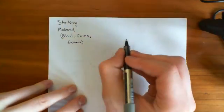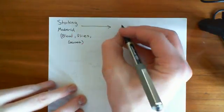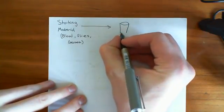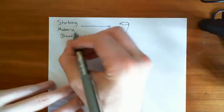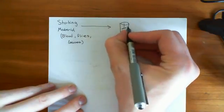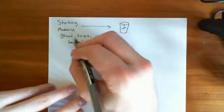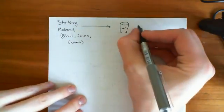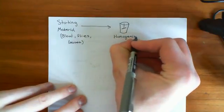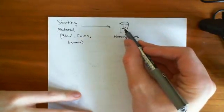You start off with some biological material and put it in a homogenizer — which is effectively the same as a smoothie maker. It has a blade that spins around and mushes everything up. If you put fruit in, you get a smoothie; if you put flies in, you get a brown mush. You basically homogenize your starting material, and you end up with a mush that contains the protein of interest.